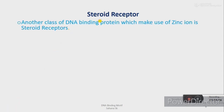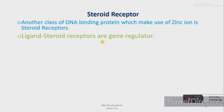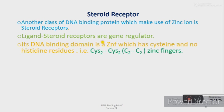Now we are going to talk about steroid receptors. You might ask why we are discussing steroid receptors here — it is because steroid receptors are another class of DNA binding proteins which make use of zinc ions. Steroid receptors are generally intracellular receptors found in the nucleus and cytosol. When a ligand binds to them, they form a ligand-receptor complex which acts as a gene regulator. The DNA binding domain has a zinc finger which contains cysteine but no histidine residue, so it is referred to as C2C2 zinc finger.